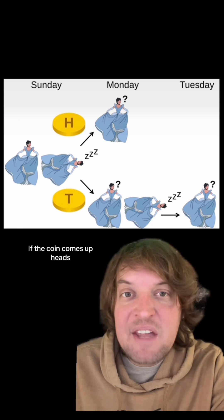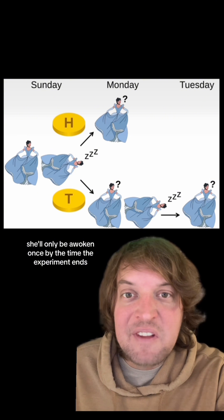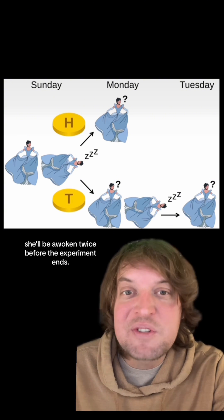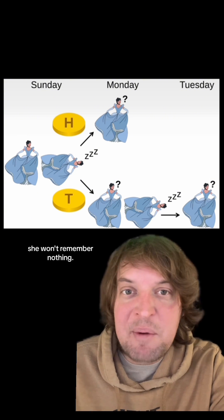So if the coin comes up heads, she'll only be awoken once by the time the experiment ends. And if the coin comes up tails, she'll be awoken twice before the experiment ends. But in either case, she won't remember nothing.